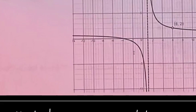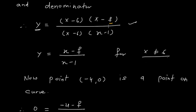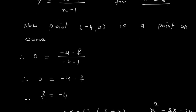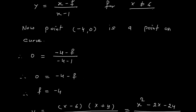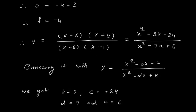On the left-hand side of the graph, I can find the point (-4, 0). So (-4, 0) is a point on the graph. I set y = 0 and x = -4, then simplify to find the value of f. I get f = -4, so (x - (-4)) becomes (x+4).